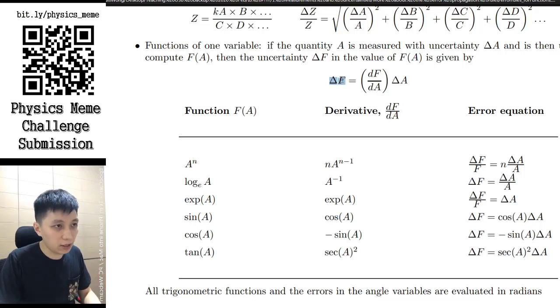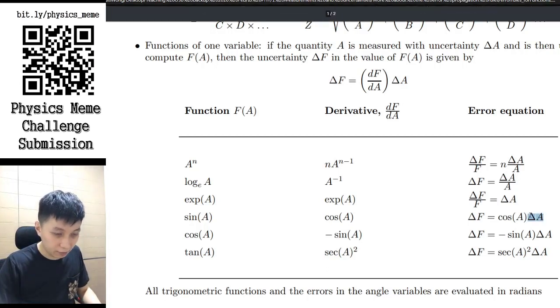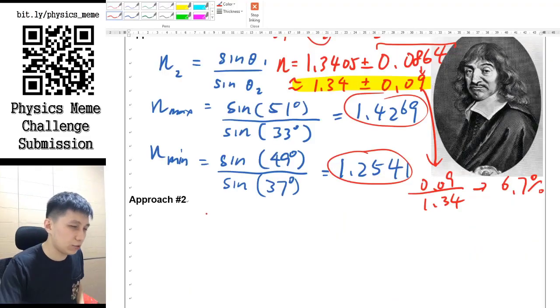ΔA is the original uncertainty from the raw data - so in our case would be the 1 degree and 2 degree thing. However, you need to pay attention that the ΔA, like let's say in our case would be 1 degree and 2 degrees, has to be in radians. You cannot do degrees.